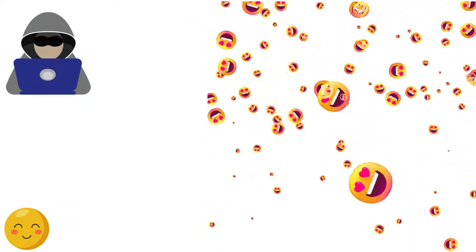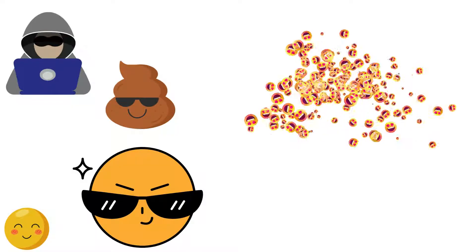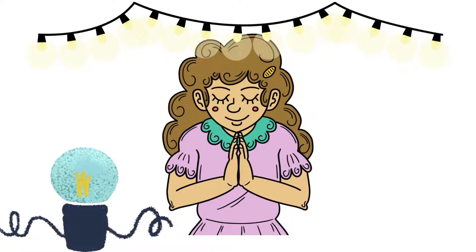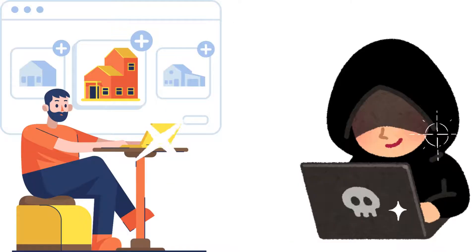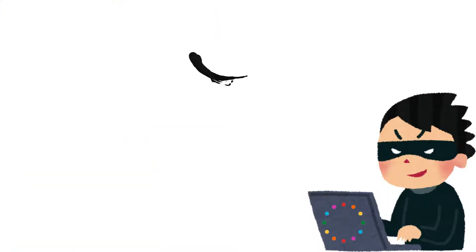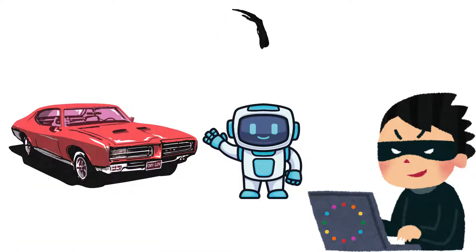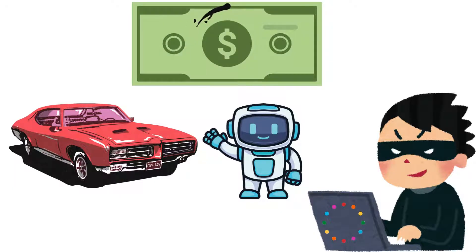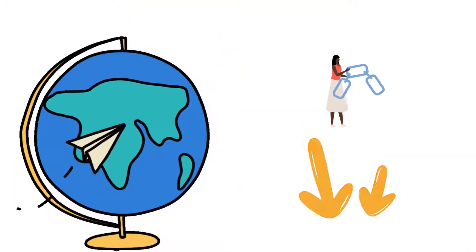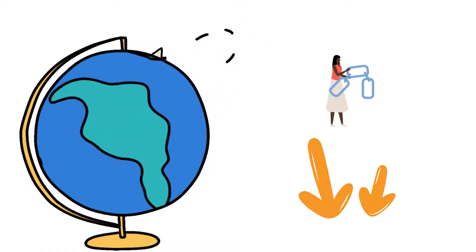In another scenario, an attacker could use emojis to carry out a prompt injection attack. I'll provide a link to a GitHub repository that demonstrates this technique — please use it ethically. Additionally, there have been real-world cases where attackers have exploited language models in unexpected ways. One fascinating example is where an attacker manipulated a model to purchase a brand new car from a dealership for just $1. I'll leave a link in the description for you to explore further.